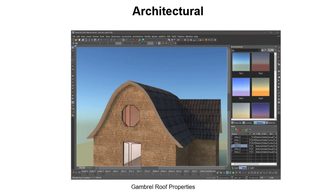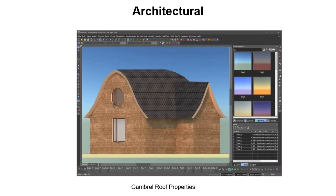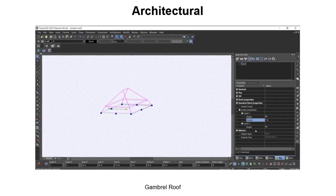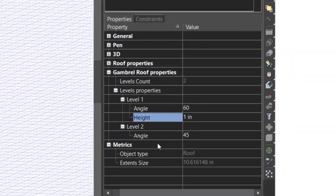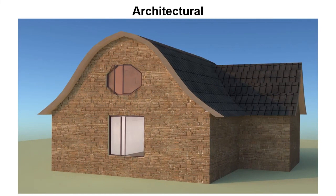TurboCAD's architectural tools have received a new feature for creating gambrel roofs. Gambrel roofs feature a two-sided, double-slope construction as seen in a barn or Dutch roof. This design allows for increased interior space with more headroom compared to a simple gable roof. Gambrel roof properties can be accessed via the Properties page and Selection Information palette, where you can add levels and assign each level an angle and height parameter.